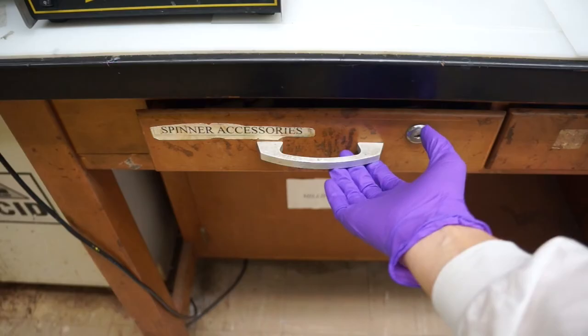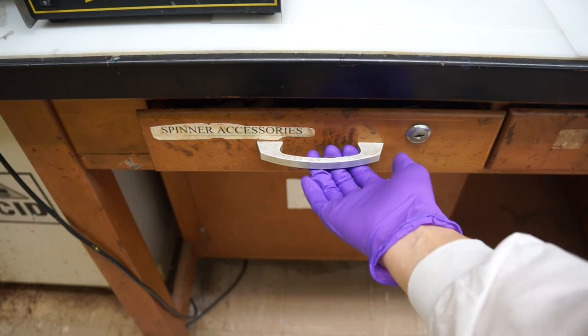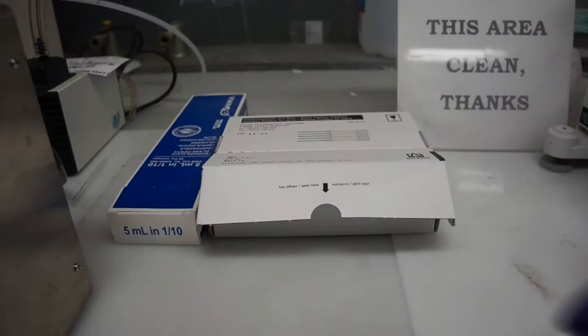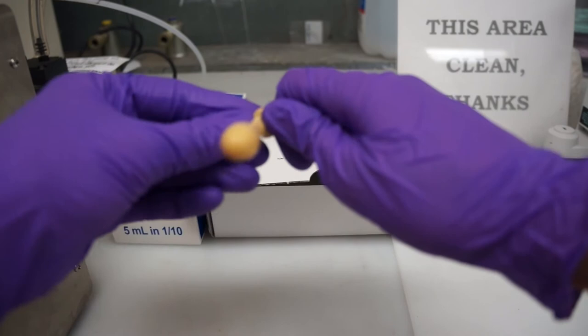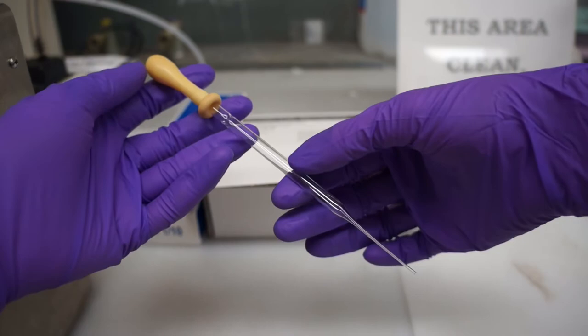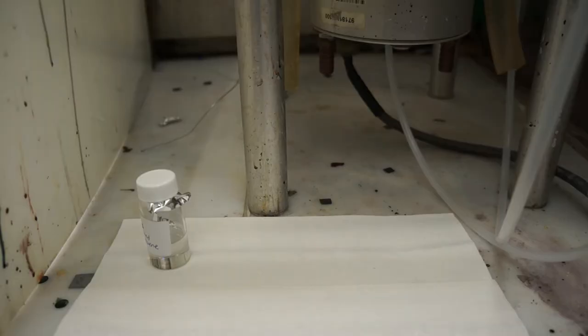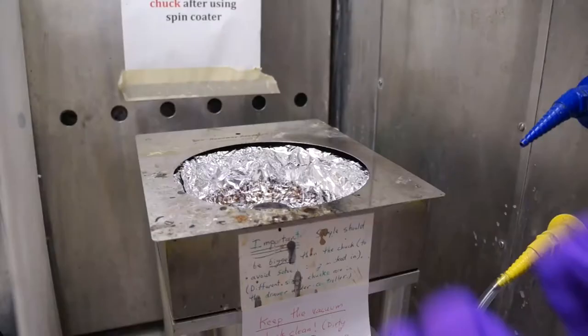From the same drawer as where we found the bulb we used for toluene, grab a small bulb. Also, grab a small glass pipette without any graduation marks on it and fasten the small bulb onto it. Take the pipette, along with some paper towels and your filtered PMMA solution, right to the foot of the spin caster, so that they are ready when we need them.